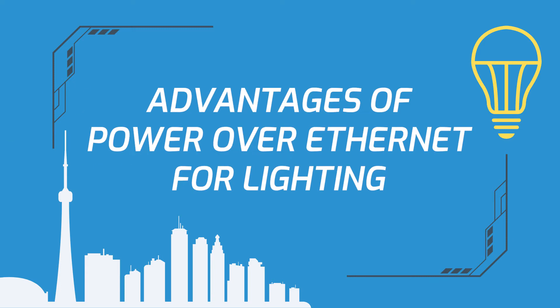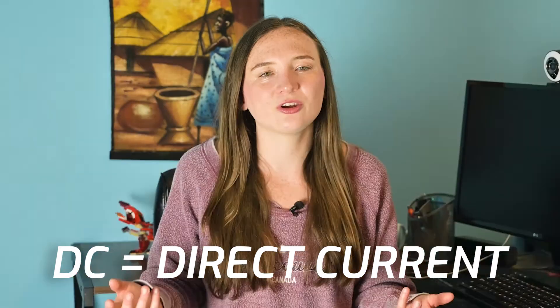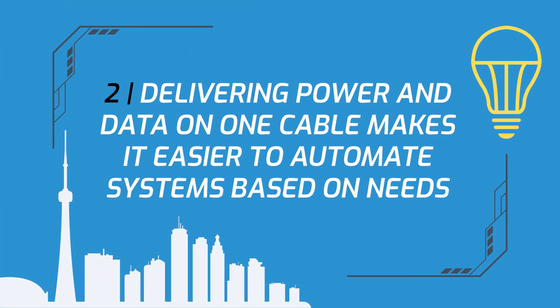When comparing the pros and cons of PoE, we're going to consider this from a lighting perspective to simplify things. These are the main advantages of powering lights with PoE. First of all, PoE distributes low voltage DC power directly to lights. If you're using LEDs, they need DC power anyway, so this cuts back on inefficient AC to DC conversions. Secondly, delivering power and data on a single cable makes it easier to automate and optimize lighting systems for efficiency and real-time occupant needs.